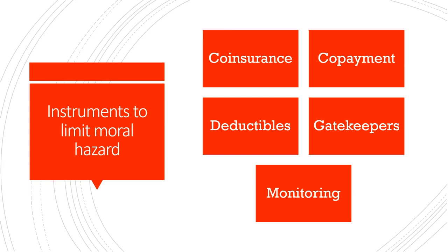There are five important instruments to limit moral hazard: co-insurance, co-payment, deductibles, gatekeepers, and monitoring. We will look at illustrations when there is co-insurance, co-payment and full insurance, and we will also get introduced to some basic characteristics of deductibles, gatekeepers, and monitoring and how they impact demand for health insurance.